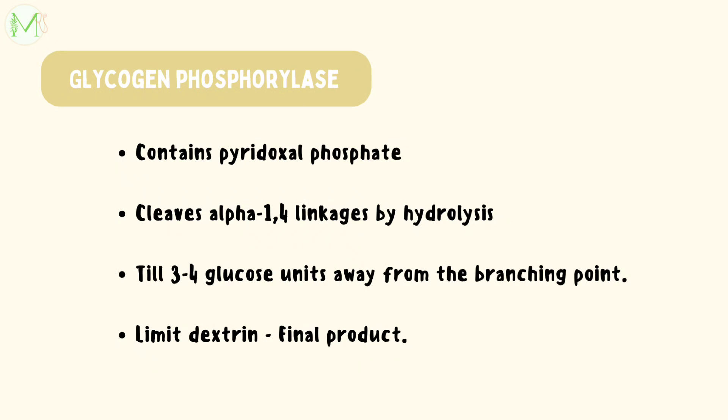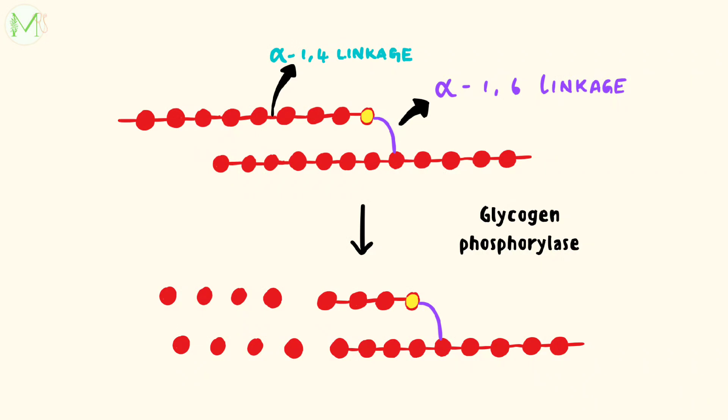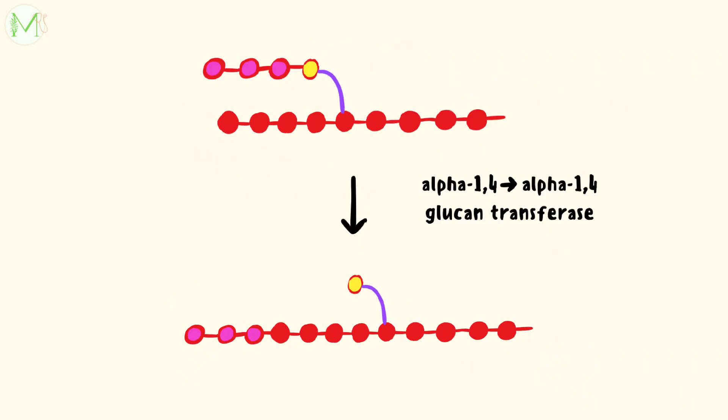If glycogen phosphorylase alone acts on the glycogen molecule, the final product is a highly branched molecule called limit dextrin. In this picture of glycogen, we can see each glucose molecule is linked by alpha-1,4 linkages and branches by alpha-1,6 linkages. The enzyme glycogen phosphorylase acts only on alpha-1,4 glycosidic linkages. A block of 3 glucose residues, highlighted in pink, are transferred from the branching point to another branch by alpha-1,4 to alpha-1,4 glucan transferase enzyme.